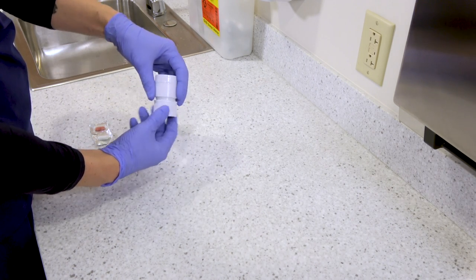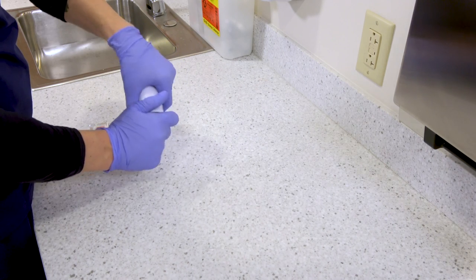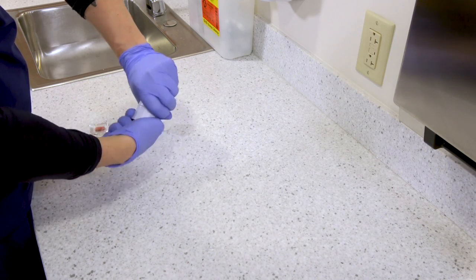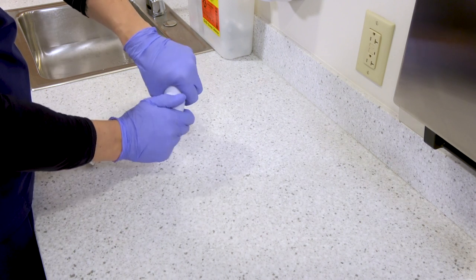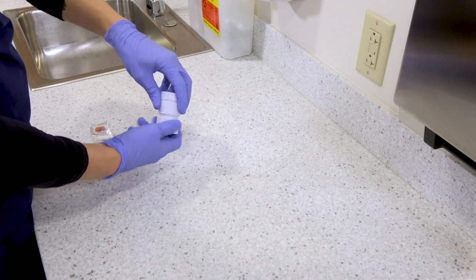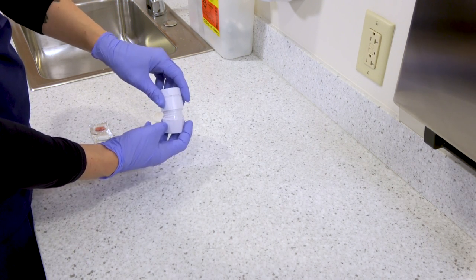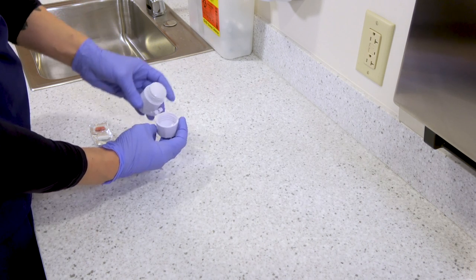Twist it closed and you'll have to twist past resistance—that's just the pill breaking. Twist it back and forth a few times to make sure the pill is fully crushed and you've got a nice fine powder. Open the crusher, tap the lid a few times to remove residue, and transfer the powder into a medicine cup.